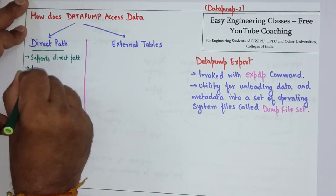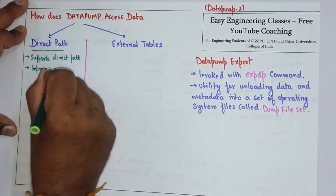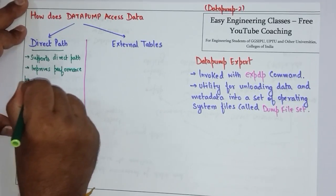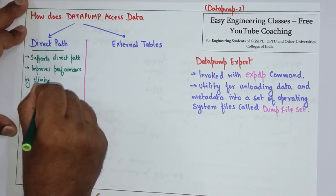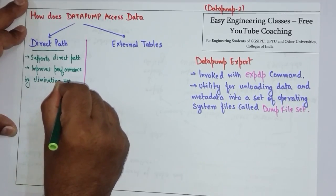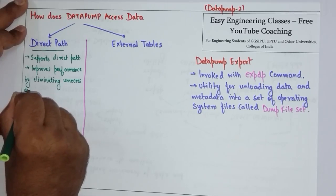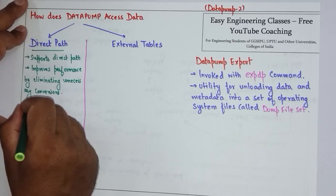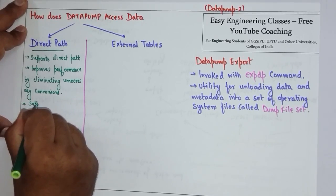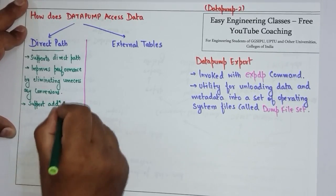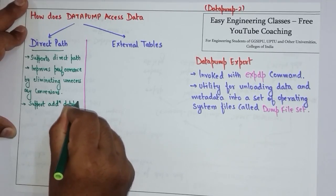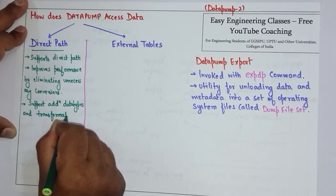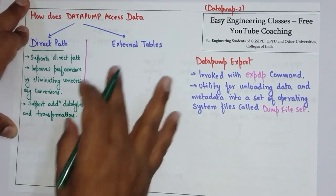Direct Path improves performance by eliminating unnecessary conversions. It also supports additional data types and transformations.